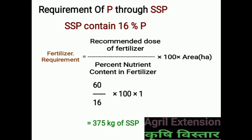For the requirement of Phosphorus through SSP, we know SSP contains 16% Phosphorus. Using the formula, fertilizer requirement equals recommended dose divided by percent nutrient content into 100 into area in hectares. Putting in the values: 60 kg divided by 16, into 100, into 1 hectare. By solving this equation, we get 375 kg of SSP.